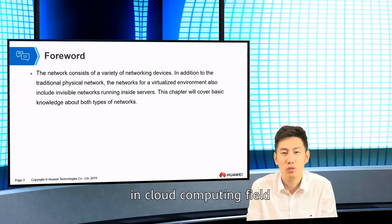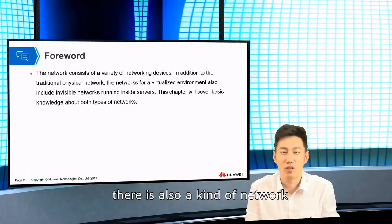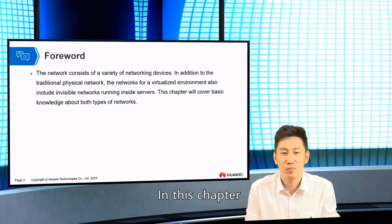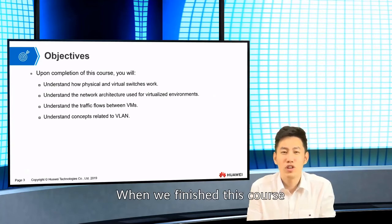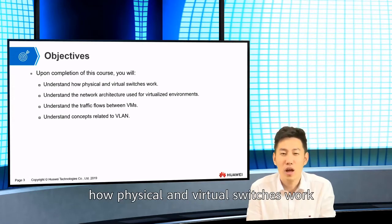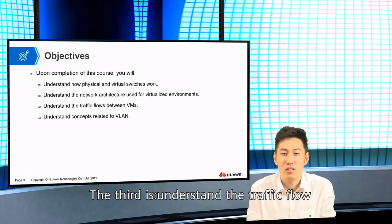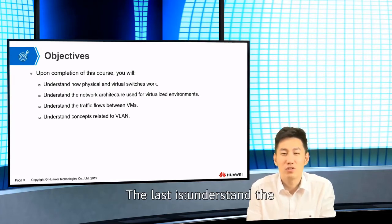Actually, in the cloud computing field, the network consists of a variety of networking devices. In addition to the physical traditional network, there is also a kind of network that is invisible — it runs inside the server, and it is for the virtualized environment. In this chapter, we will cover the basic knowledge about these two types of networks. When we finish this chapter, I hope you can achieve these objectives: the first is to understand how physical and virtual switches work; the second is to understand the networking architecture used for a virtualized environment; the third is to understand the traffic flow between VMs; and the last is to understand the concepts related to VLAN.